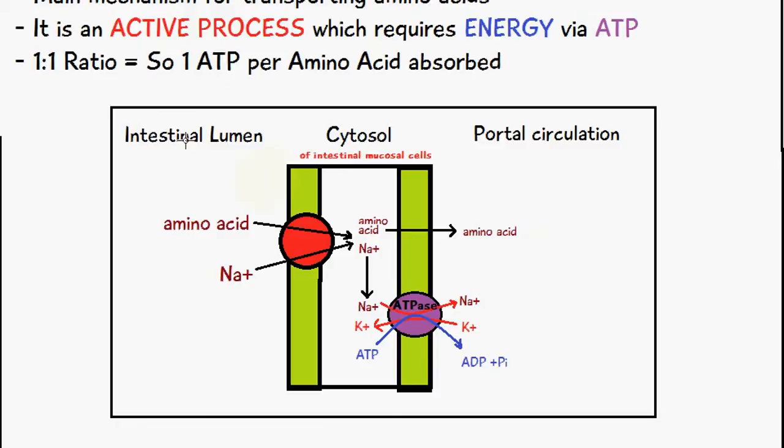Here we have the intestinal lumen, we have an amino acid here and a sodium ion. They bind onto this co-transporter here which has two sites, one for the amino acid and one for the sodium ion, and then it's moved into the cell.